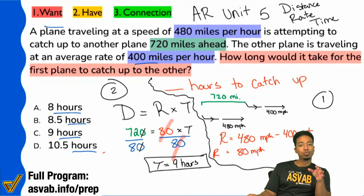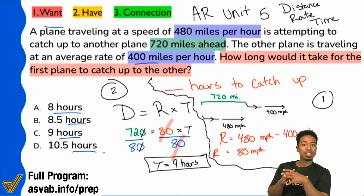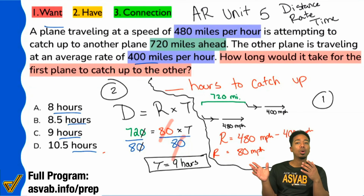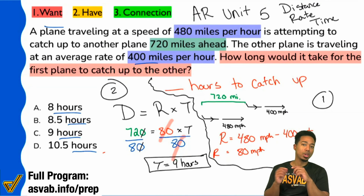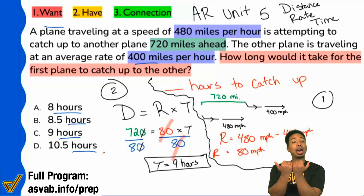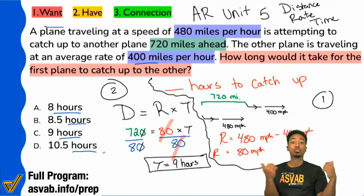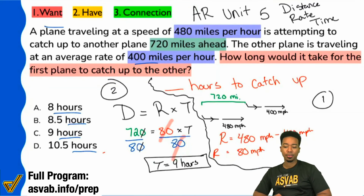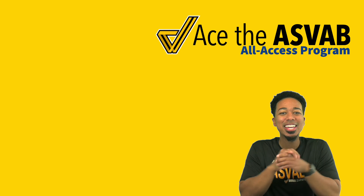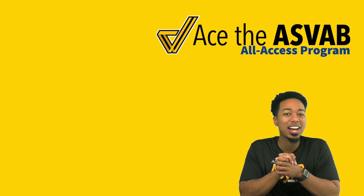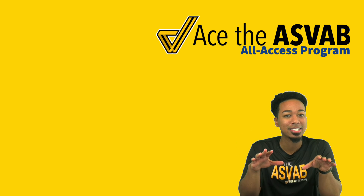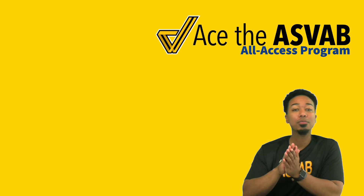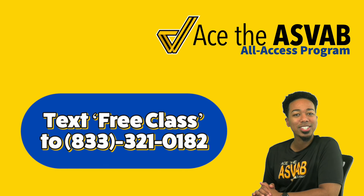For those who haven't worked with multiple rates in the same scenario: if two objects are moving in the same direction, you subtract the rates because you cancel out what they both cover. If they're going in opposite directions, they're not covering the same ground — so you add their rates or distances together. As always, thank you for watching. We host free classes once a week on YouTube, so make sure you're subscribed. Check our schedule page, or text 833-321-0182 to get links for upcoming classes.